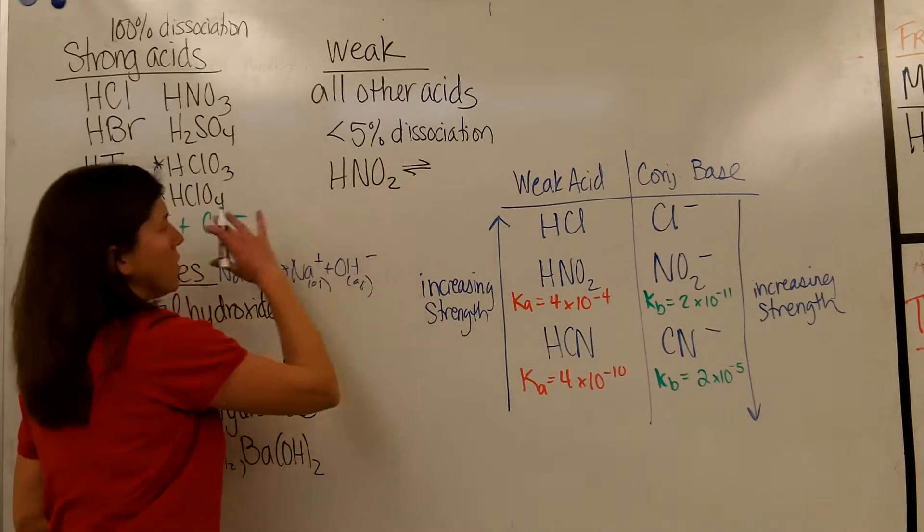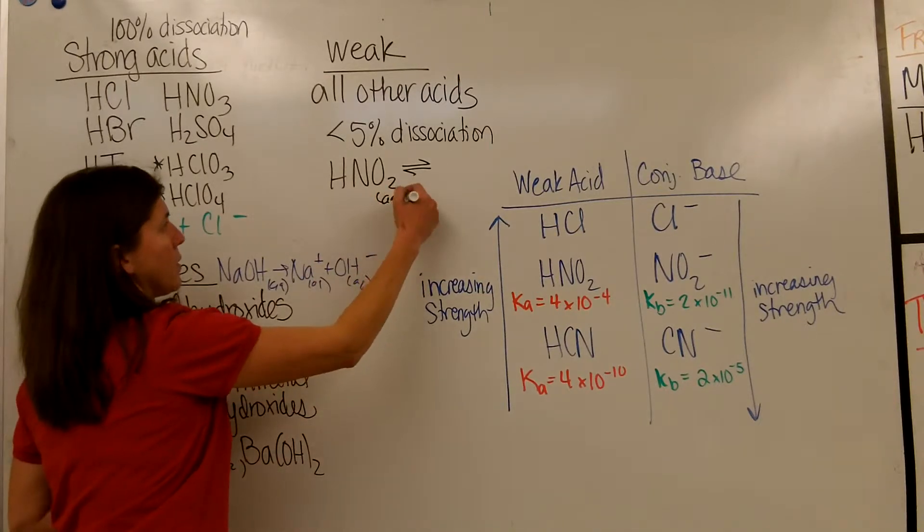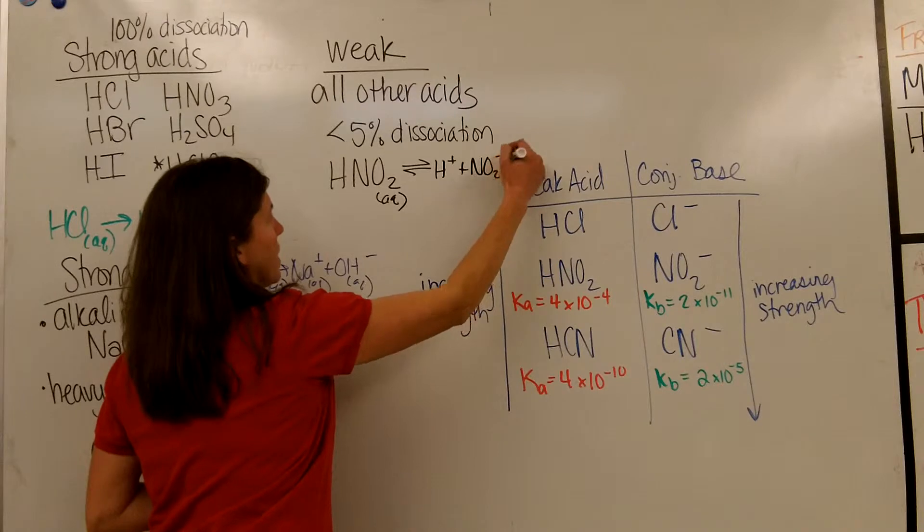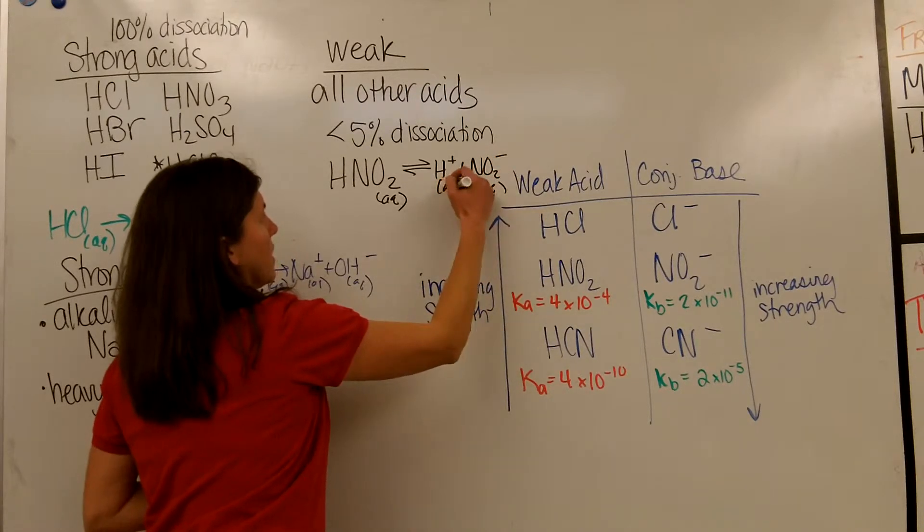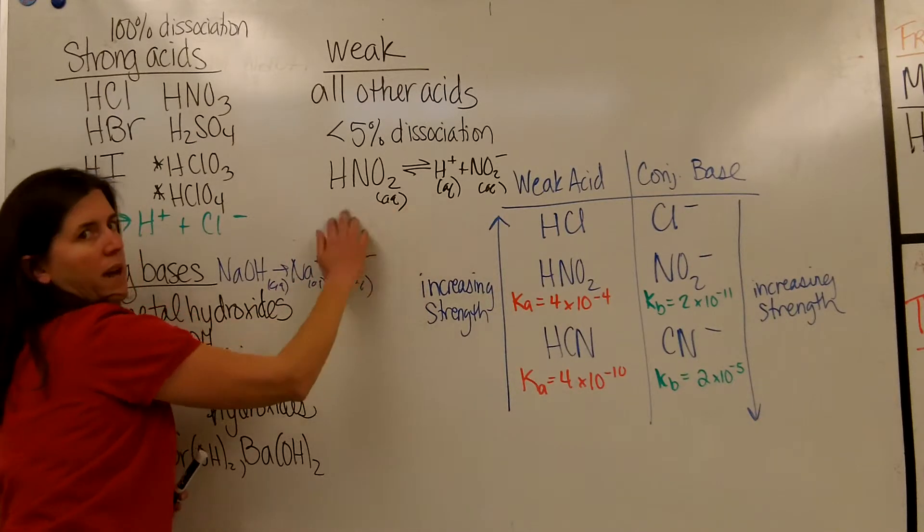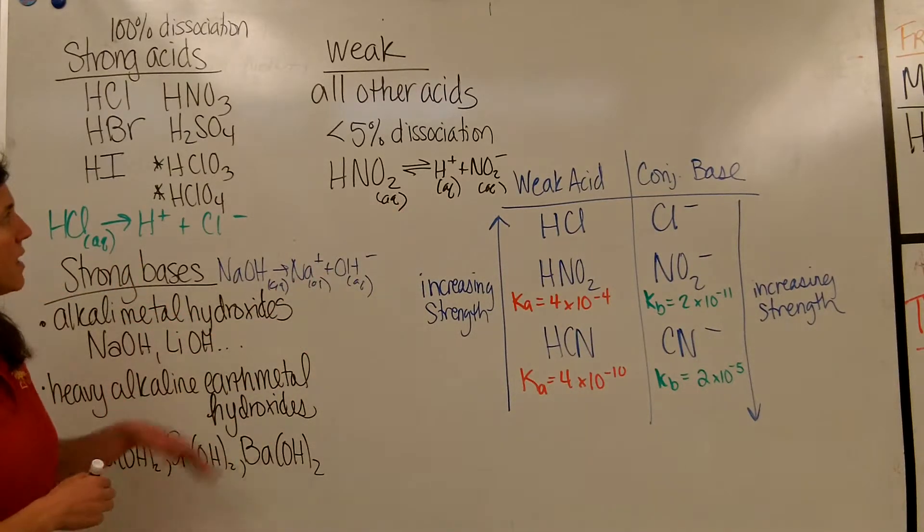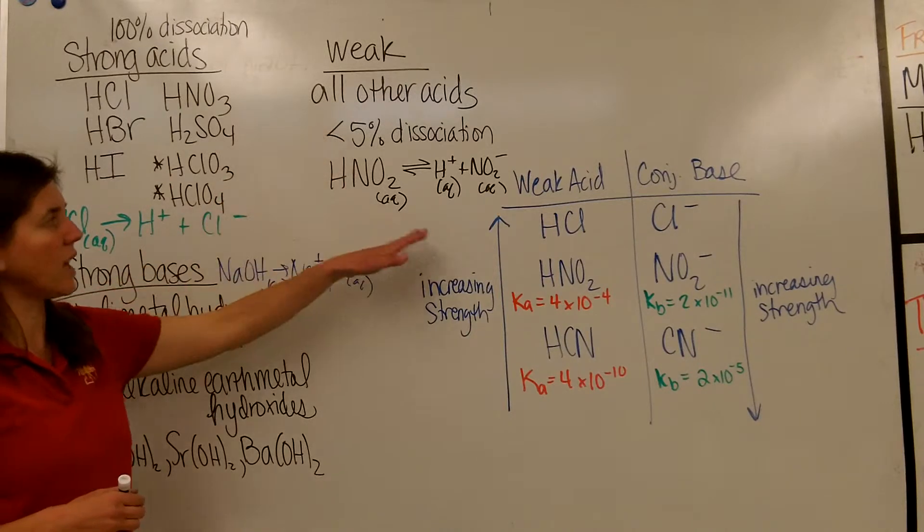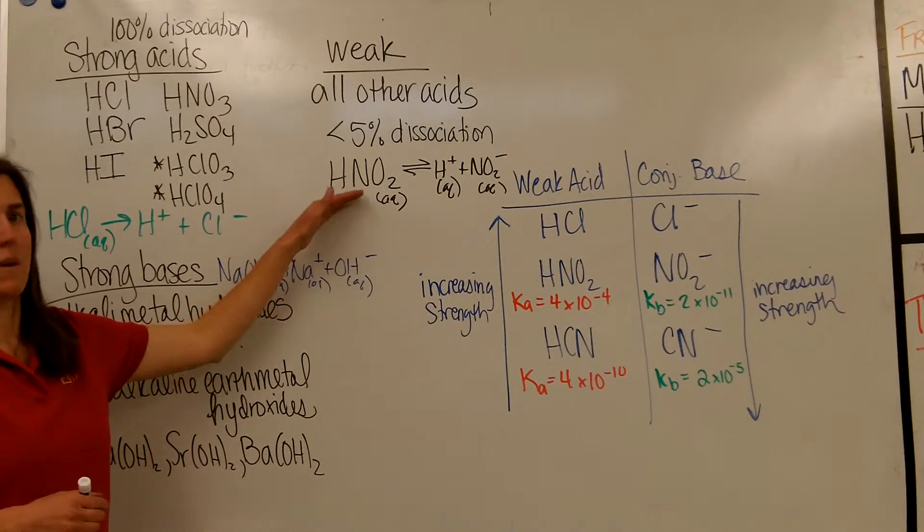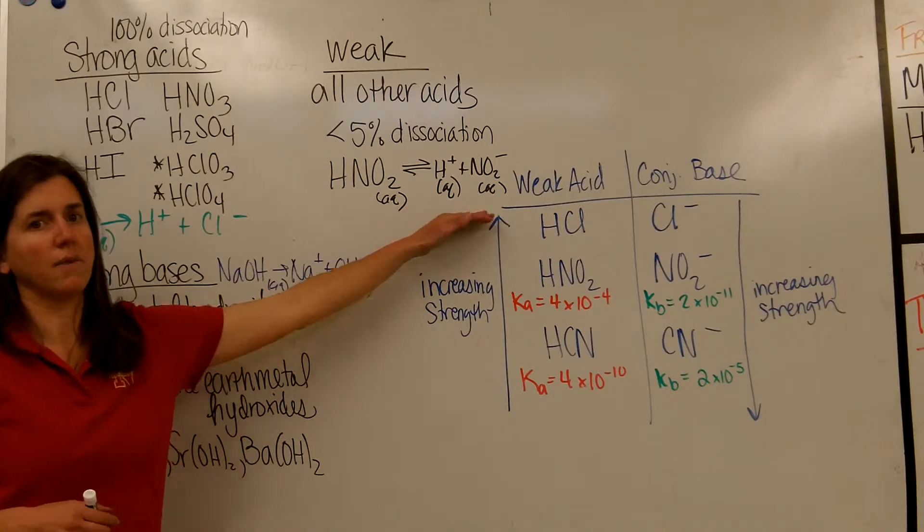So when I show what happens when I put a weak acid in water, I'm going to write it as an equilibrium system, because it is not a one-way arrow. So not all of this will turn into this. You'll have a little bit of back and forth. In fact, since less than 5% of it dissociates, at equilibrium, I'm going to have a lot more of these present in my solution than these right here.